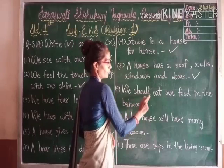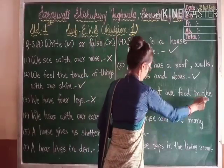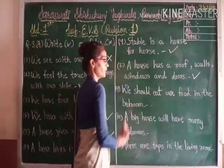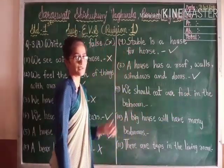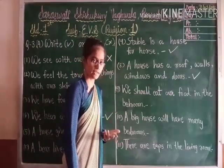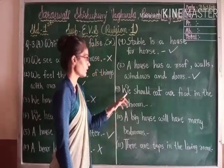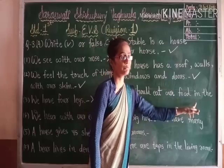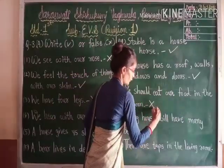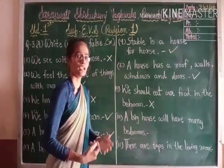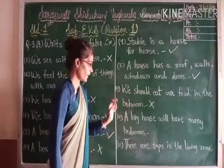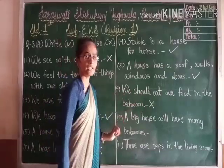Number 9: we should eat our food in the bedroom. Is it true or false? What do we do in the bedroom? We sleep in the bedroom. We cannot eat in the bedroom. So the sentence is false. We should eat our food in the dining room or lunch room, not in the bedroom.